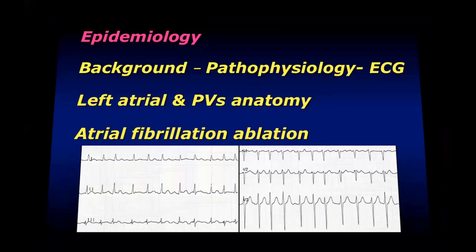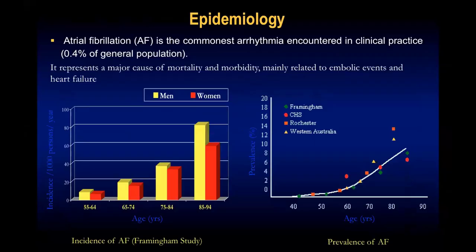We'll start with epidemiology. As we all know, atrial fibrillation is the commonest arrhythmia encountered in clinical practice, and its prevalence increases in the general population with age, reaching up to 5% beyond the age of 65 and up to 10% at the age of 80. The problem with atrial fibrillation is that it is associated with higher risk of mortality and morbidity, mainly related to thromboembolic events and heart failure.